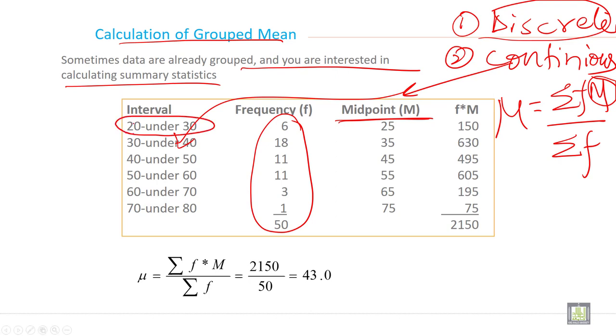For the first class, there is a lower and upper limit. The lower limit is 20 and upper limit is 30. Add these two numbers and divide by 2, so it is 25. For the second class, repeat the same: 35, 45, and so on.